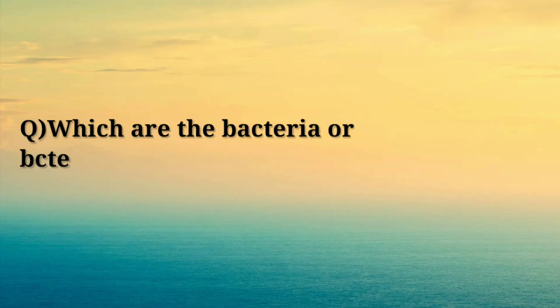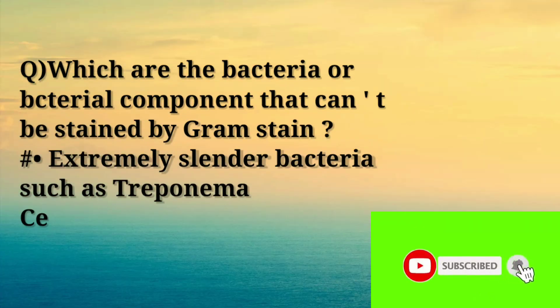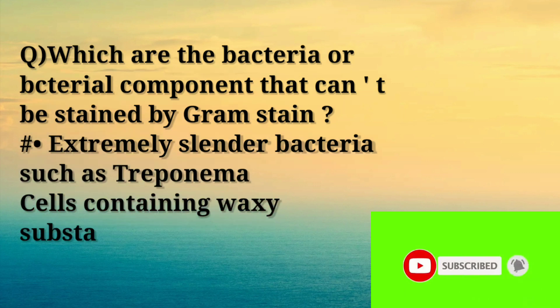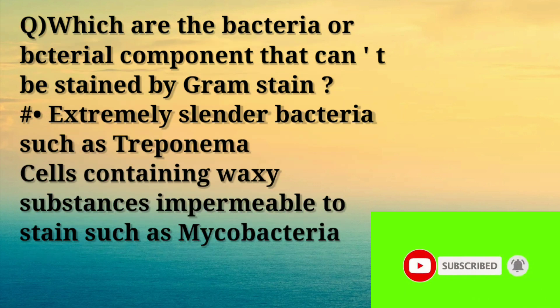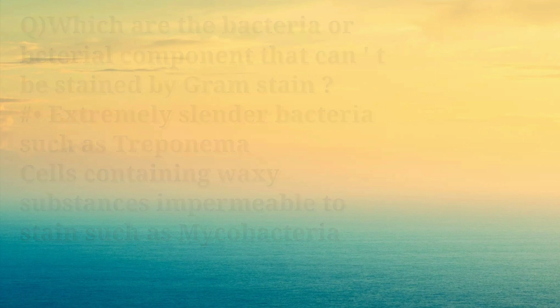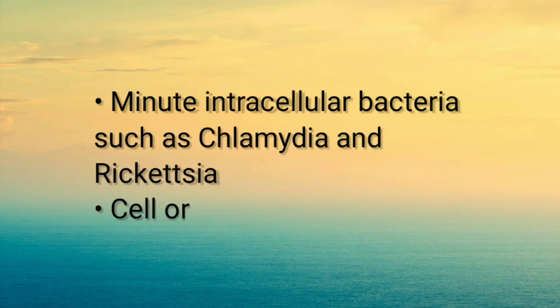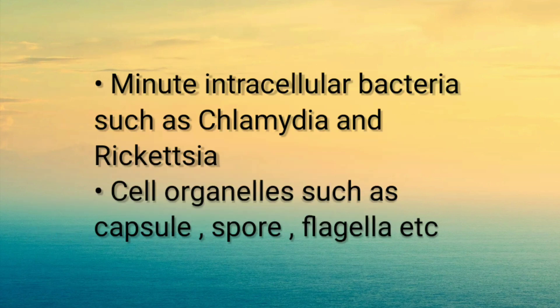Next: which bacteria or bacterial components cannot be stained by gram stain? Answer: Extremely slender bacteria such as Treponema; cells containing waxy substances impermeable to stain such as Mycobacteria; and cell organelles such as capsule, spore, flagella, etc.